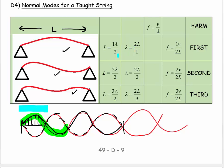And so that would equal... well, wavelength is equal to 2 over 1 L. If I look at the second pattern, that's a complete wavelength, so L is equal to 2 over 2 lambda over 2.